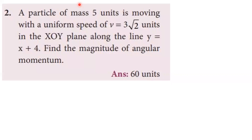A particle of mass 5 units is moving with a uniform speed v = 3√2 units in the XOY plane along the line y = x + 4. Find the magnitude of angular momentum. The general formula for angular momentum is momentum multiplied by perpendicular distance.